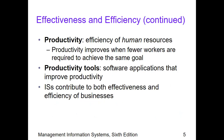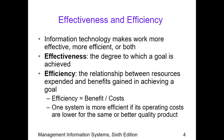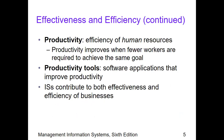Productivity, on another hand, can also be expressed as output over cost input. In productivity, we talk about human resource efficiency. It has been noticed that productivity improves when fewer workers are required to achieve the same goal, because we are no longer in the industrial era. Nowadays, we have machines, equipment, and computers — information systems — to help us achieve our goals. We also have productivity tools, which are software applications used to improve productivity, and ISS would contribute to both.